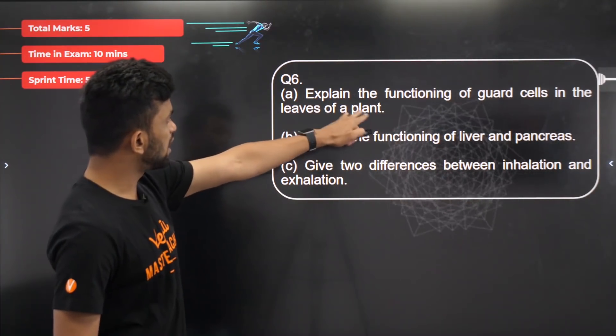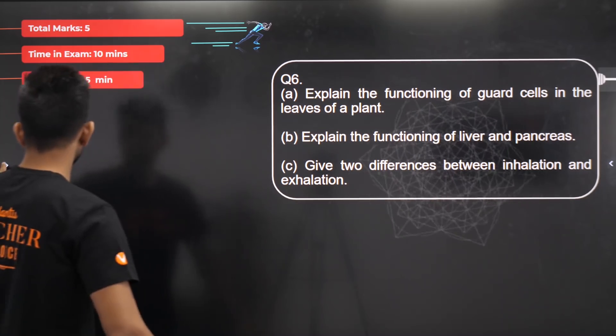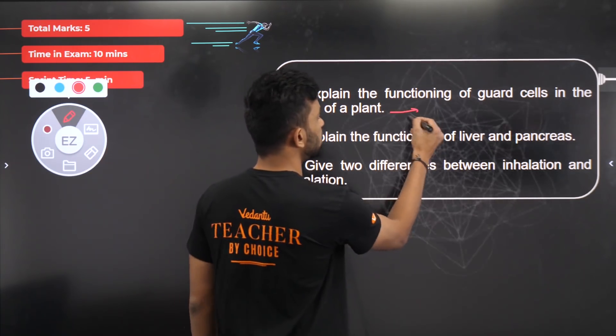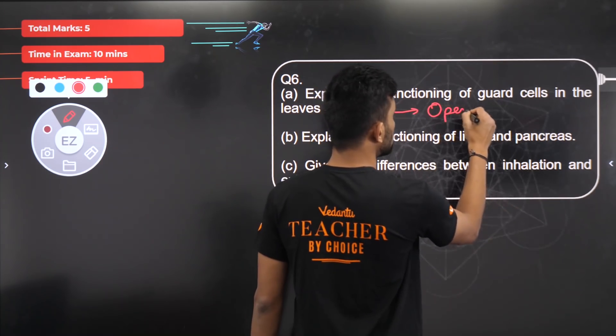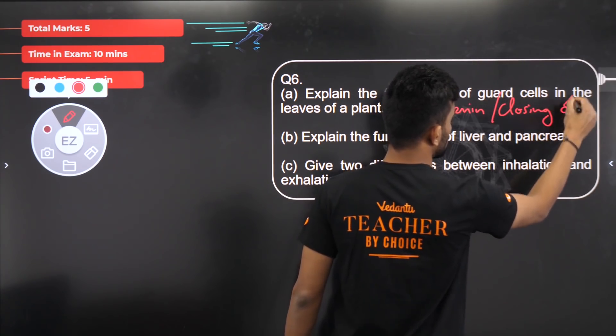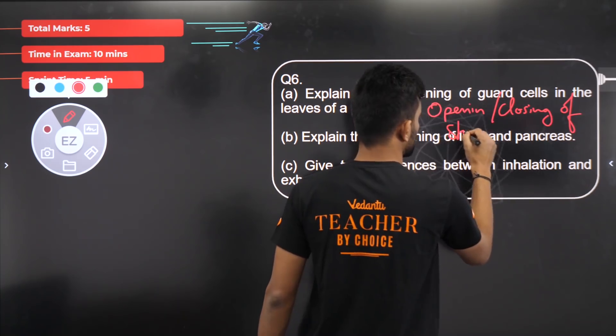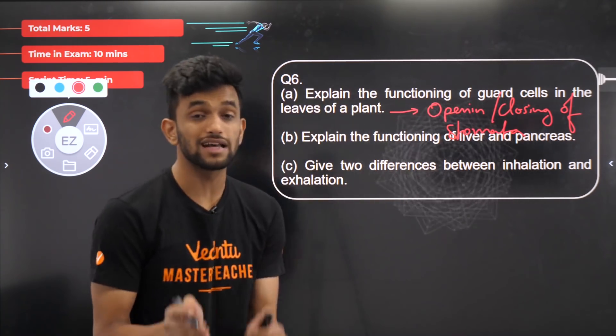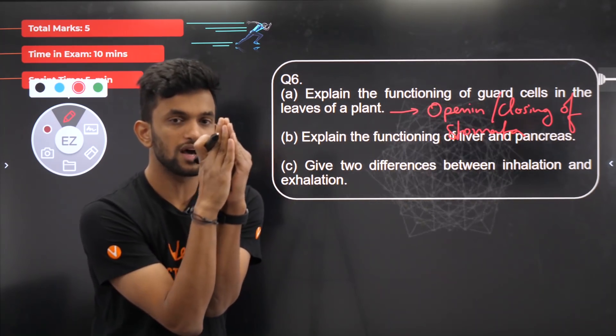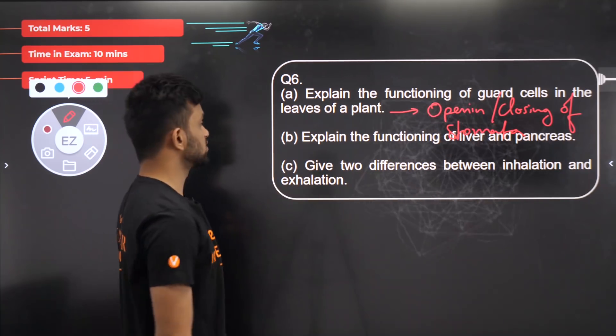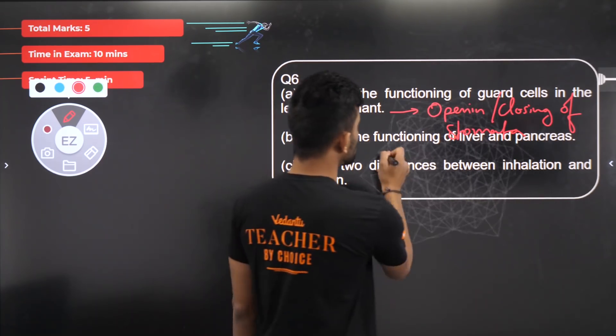Explain the functioning of guard cells in the leaves of a plant. Guard cells are the cells surrounding the stomata. They help in opening or closing of the stomata. Stomata open when water enters inside the guard cells. Stomata close when water comes out of the guard cells.